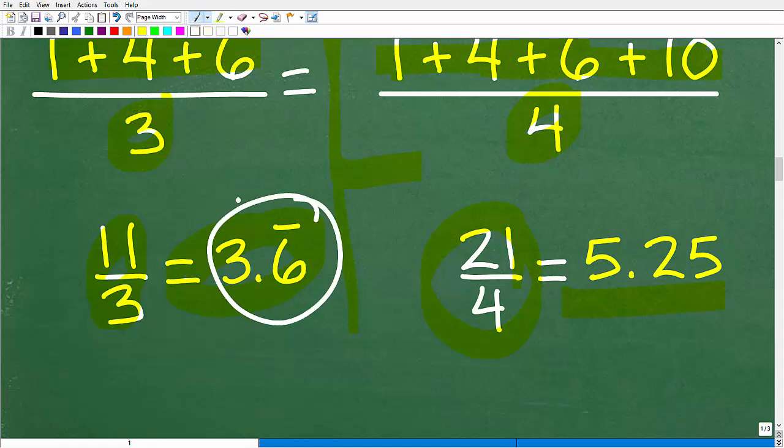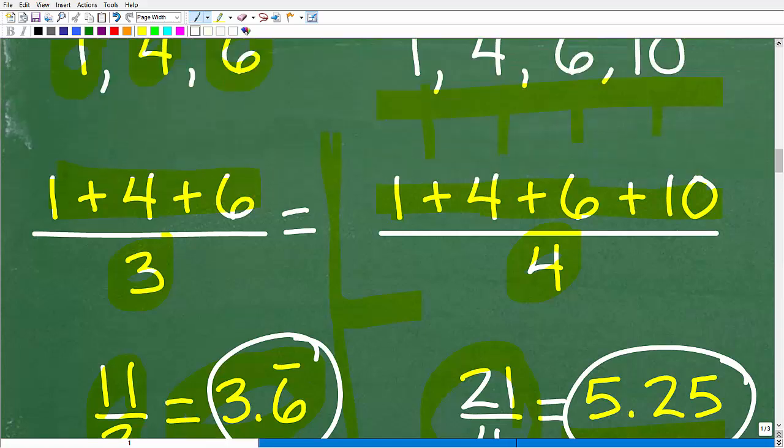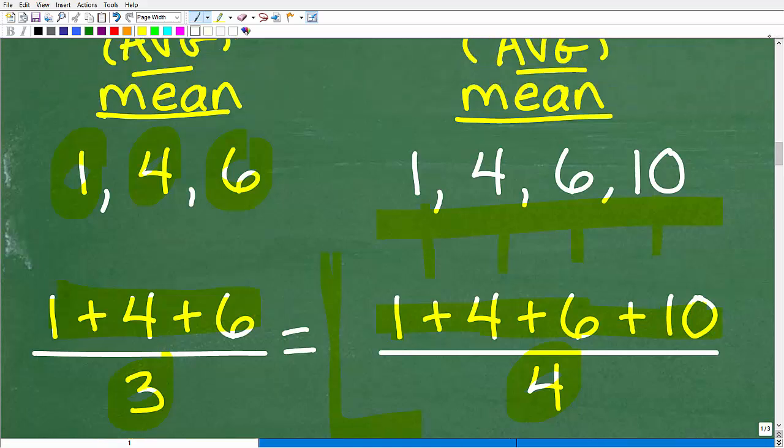So again, we have the mean here or the average. And what is this telling us? Well, it's just one way to try to look at this information and make sense of it. That's what we mean when we use terms like the average, right? Like what is the average cost of a house? What is the average cost of a pair of shoes? What is the average cost of a car? The average is trying to give us a sense of something that represents the bigger picture.